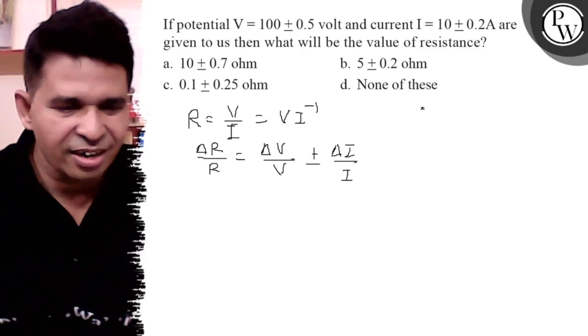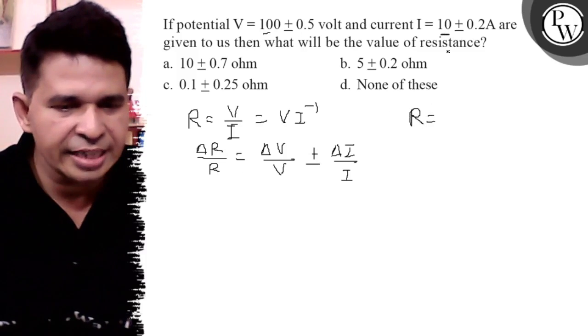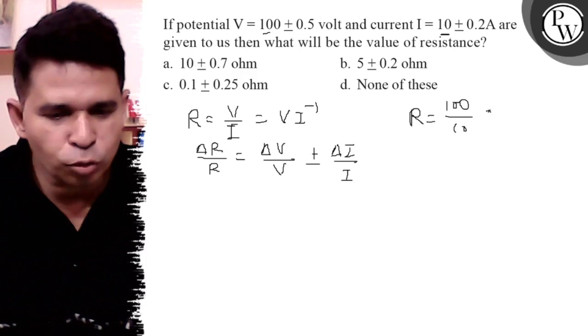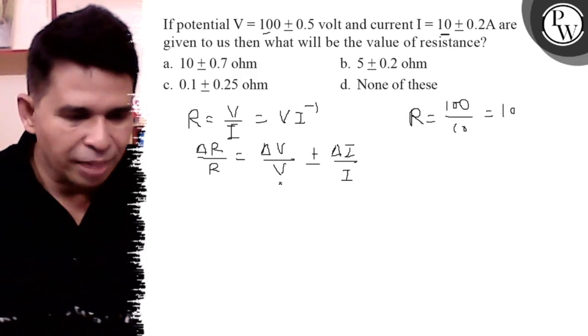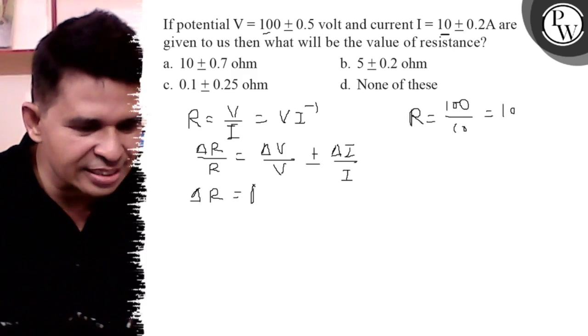Is that clear? But what is the resistance? Resistance here, the voltage is 100 and the current is 10, so what is the answer? 10 ohm. But what is the delta R?